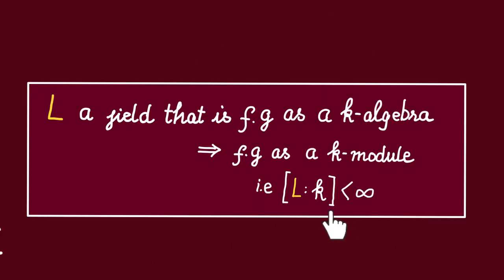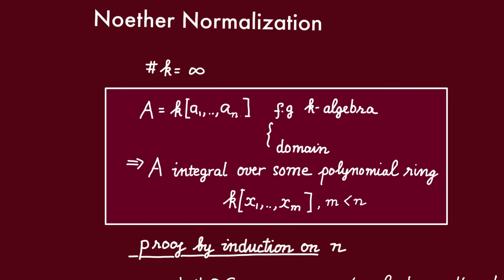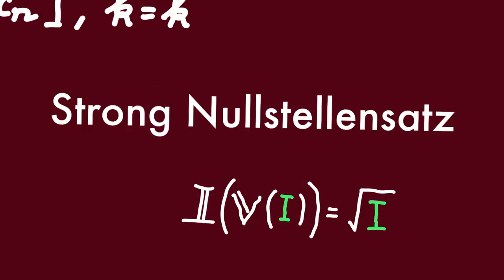Next up, we're going to prove this theorem which we used in our proof of weak Nullstellensatz. For that, we would need Noether normalization, so we'll also talk about that. And in the video after that, we're going to discuss the strong Nullstellensatz. We'll see you next time.